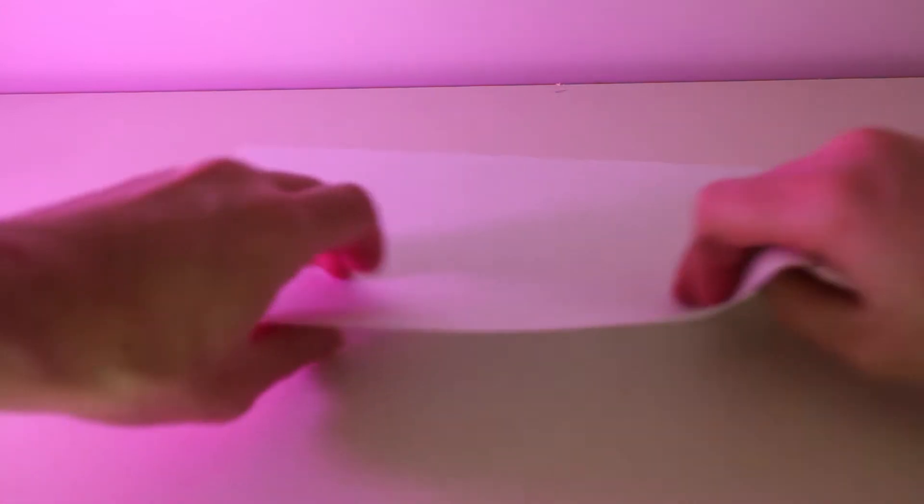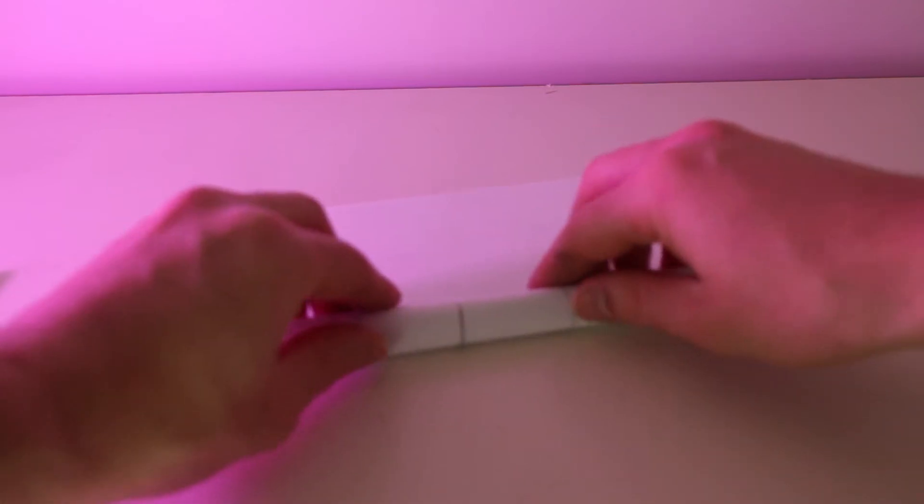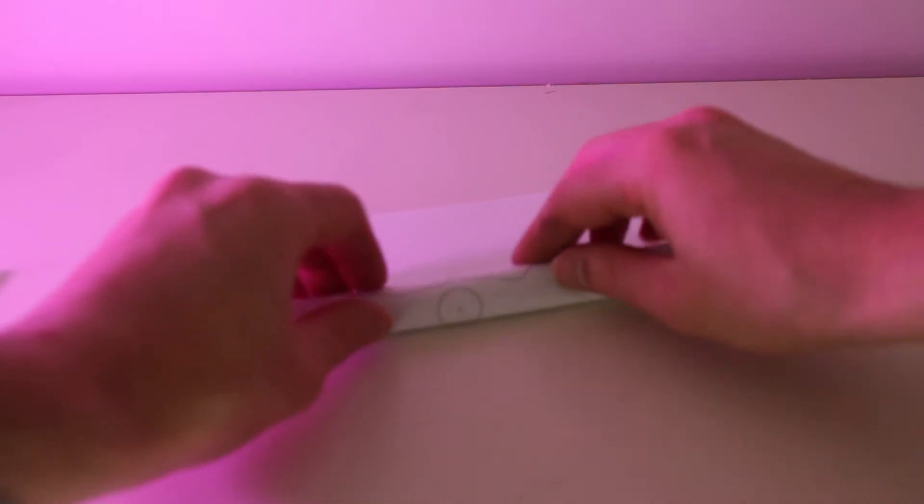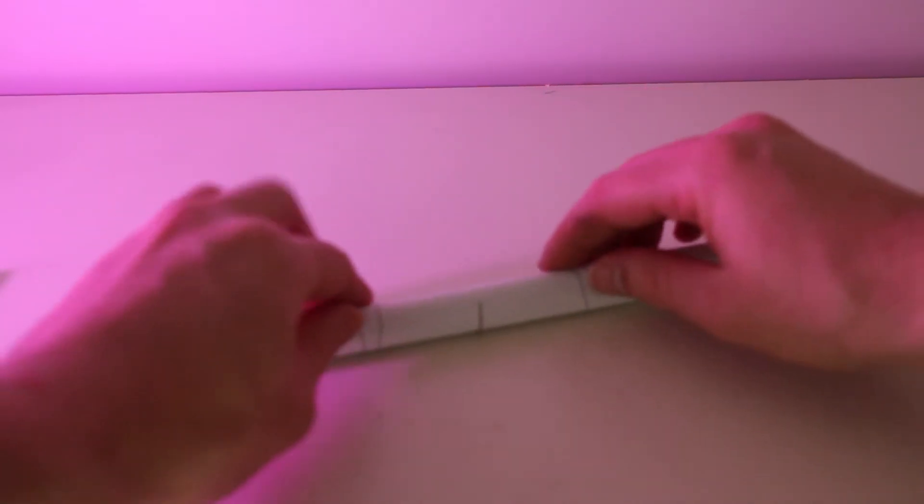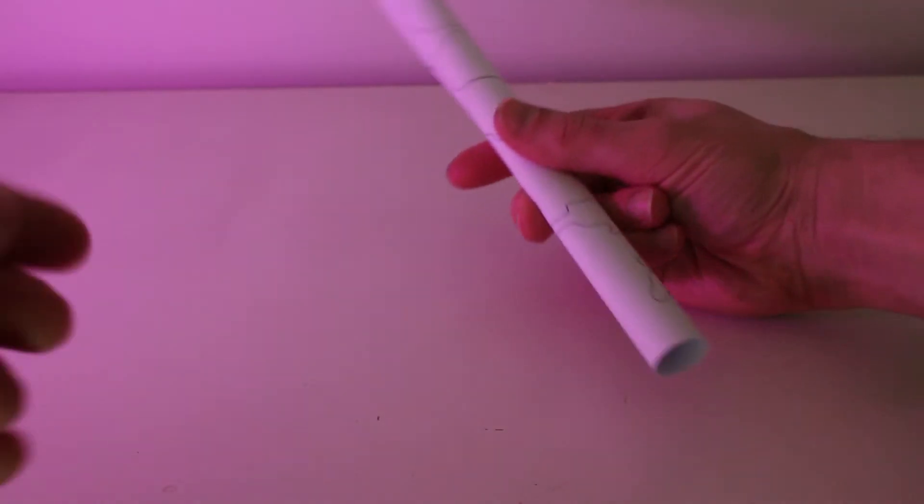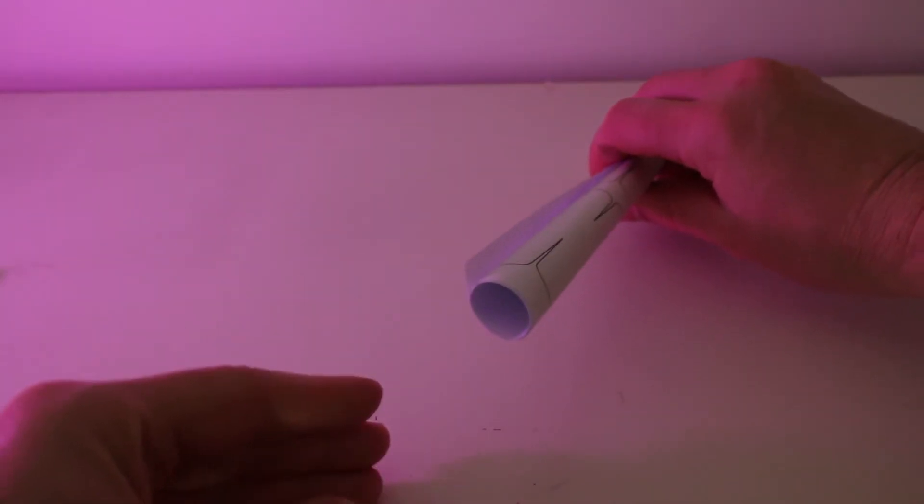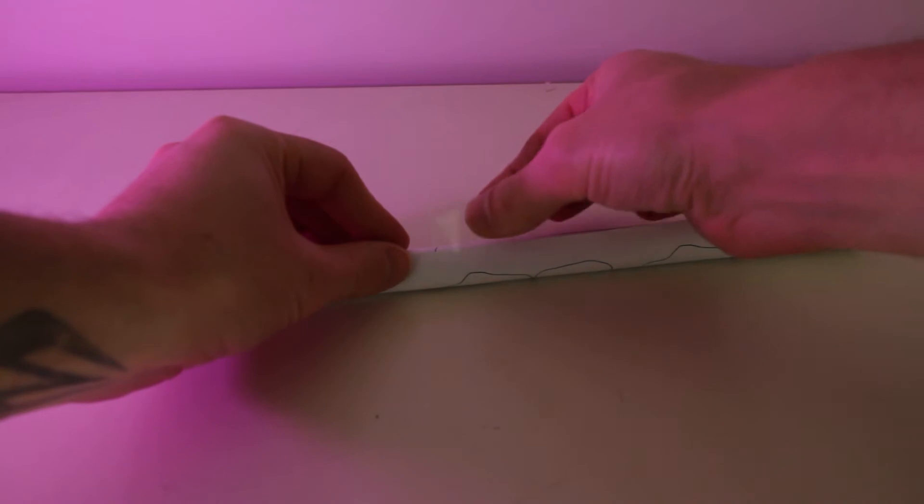Start by rolling an A4 piece of paper into a tube lengthways. Use some sticky tape to secure it in place.